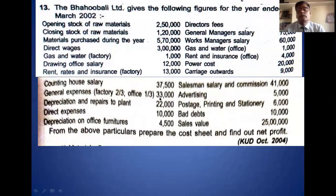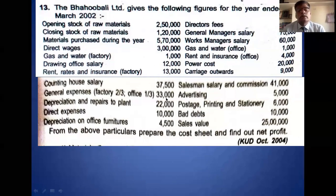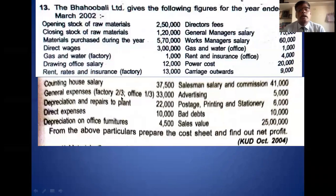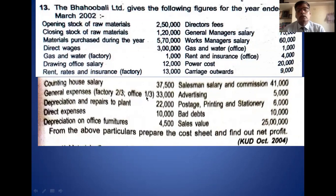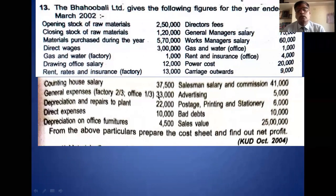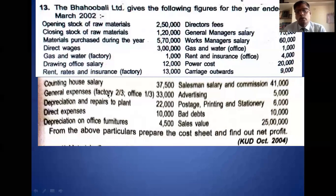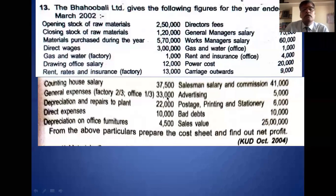The general expense is 33,000. They asked us to allocate this general expense between factory and office. You take one-third to office and two-thirds to factory. Two-thirds of 33,000 is 22,000 — that goes to factory overhead. One-third is 11,000 — that goes to office and administration. So you split this amount between office and factory.